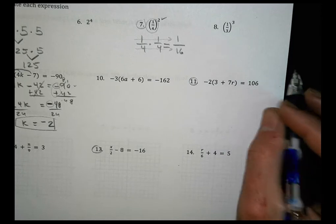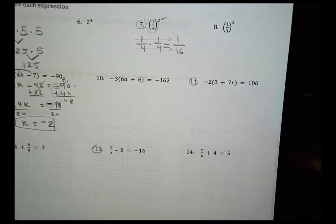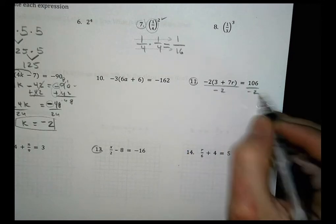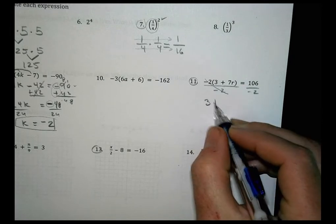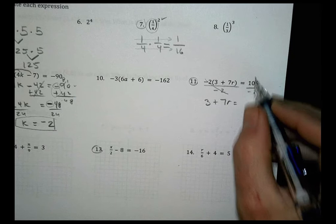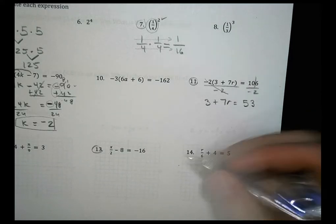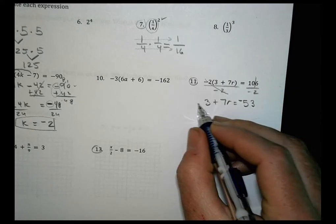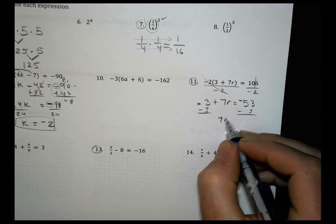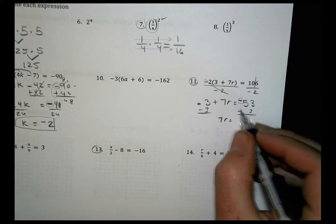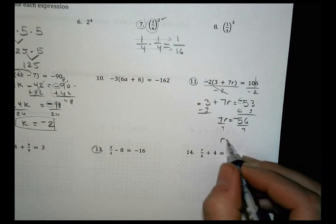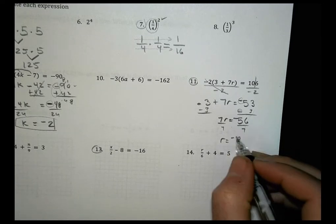Number 11. Again, I can distribute first, or I can actually divide by 2. Let's try to divide by 2 this time. Let's divide both sides by negative 2, so that eliminates it there. On this side I'm left with 3 plus 7r equals, well what's half of 106? Half of 10 is 5 and half of 6 is 3. And I have a positive divided by negative, so I have negative 53. Now I will subtract 3 from both sides. And I have 7r. 53 and 3, they're both negative, so I find the sum, which is 56, and I keep the sign the same. So negative 56. Divide both sides by 7. And r equals 56 divided by 7 is 8. Keep it negative. And that's it.